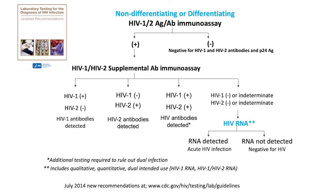Just as a reminder, when I talk about algorithm-defined acute infections, what I'm looking at is the initial test being repeatedly reactive, and then the supplemental test being either HIV-1 negative or indeterminate, or HIV-2 negative/indeterminate, and then reflex to RNA — and it's that RNA result on the left being defined as the acute infection.